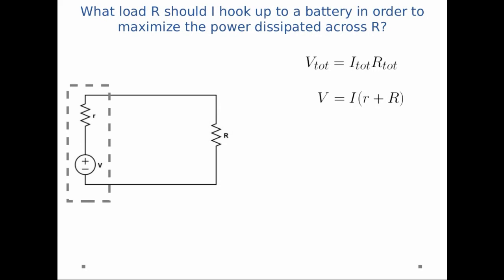I is the current which I need to solve for, and the total resistance is just little r plus big R, the load resistance plus the internal resistance. And I can just rearrange and I get I is equal to V divided by r plus R.